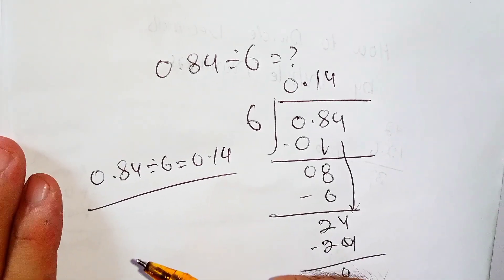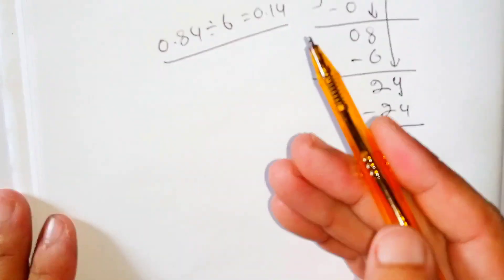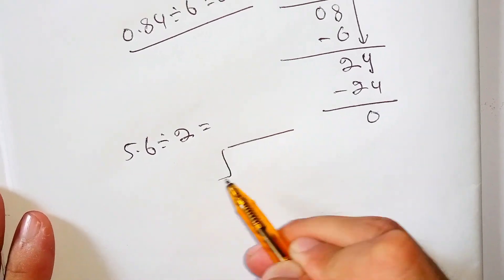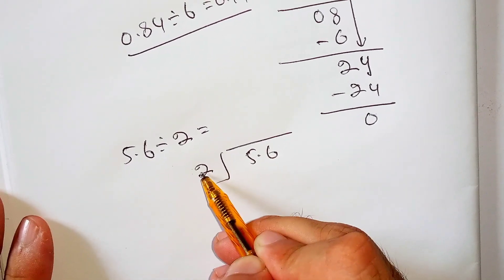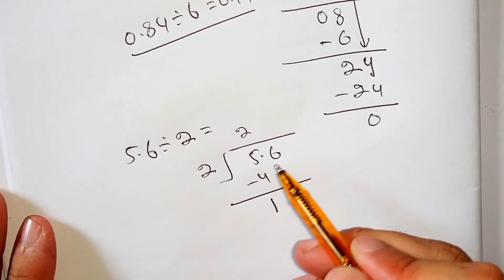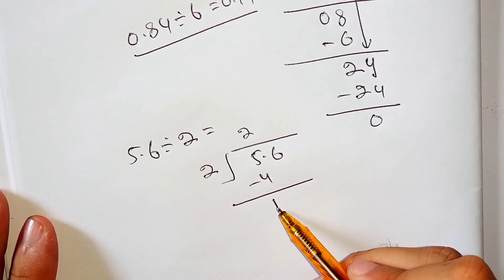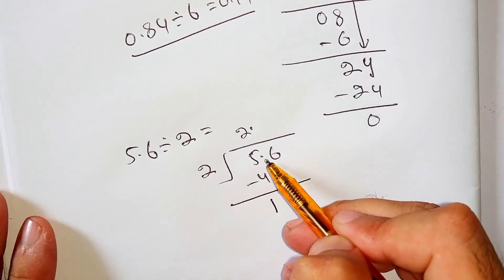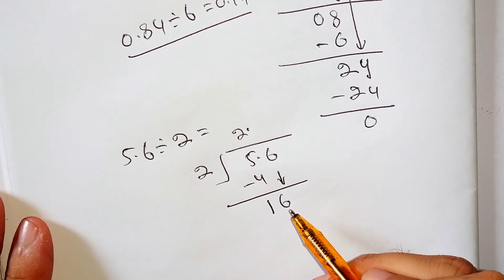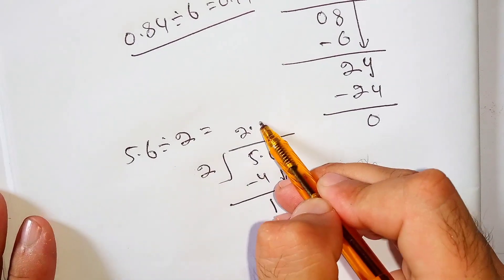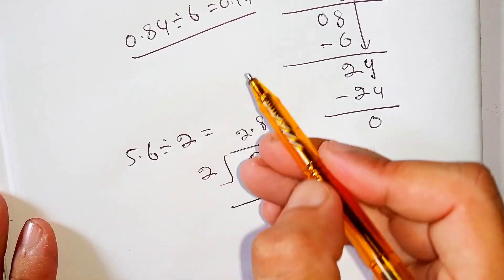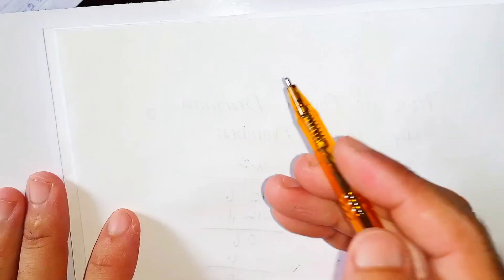Now let's divide 5.6 by 2. How many times does 2 go into 5? 2 times 2 is 4 — subtract, remainder is 1. There is a decimal point, so we put the decimal point in the quotient after the 2, then bring down the 6 to make 16. How many times does 2 go into 16? 2 times 8 is 16 — subtract, remainder is 0. So 5.6 divided by 2 equals 2.8.